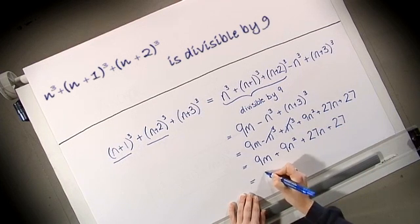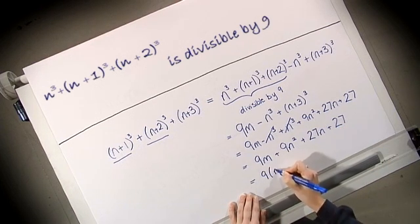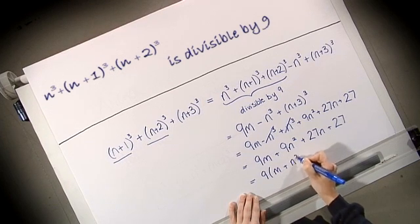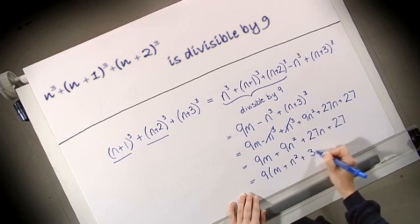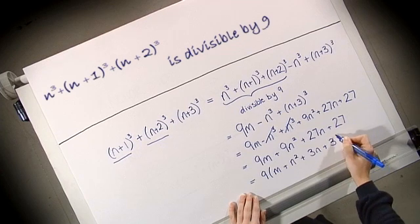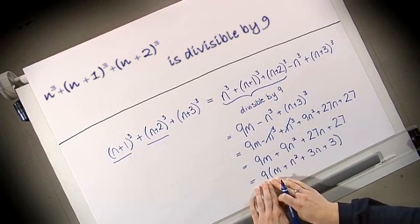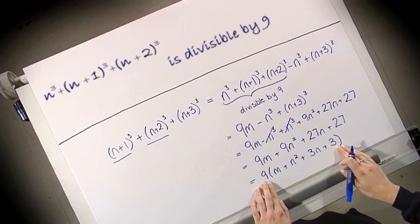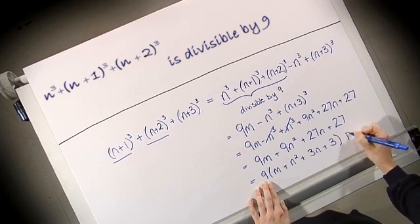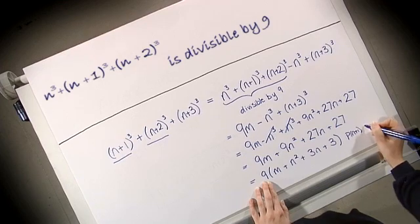Now each of these terms has a factor of 9. So let's pull that out. I have 9 times (m plus n squared plus 3n plus 3). So the 9 has been pulled out. It shows that this is divisible by 9. So P(n+1) must be true.